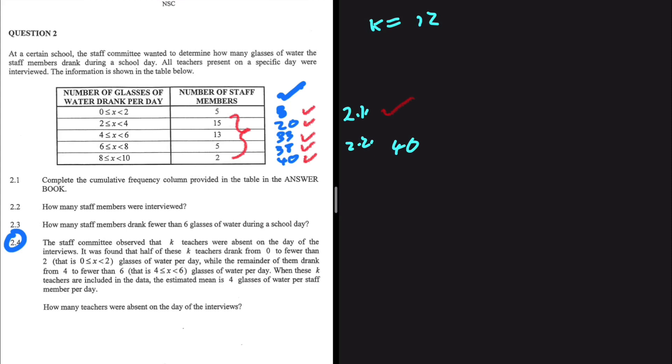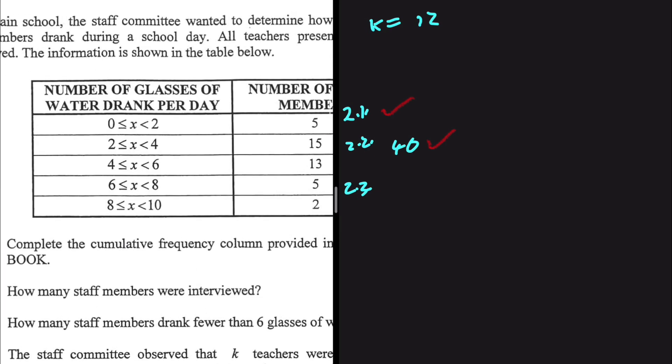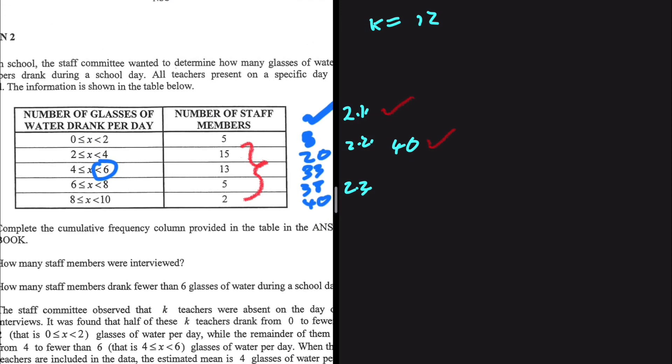2.3, how many staff members drank fewer than six glasses of water during a school day? So let's take a look at how our data is represented. In this line we have fewer than 6 right, as this is less than 6 and not less or equals to.